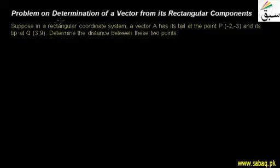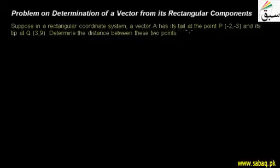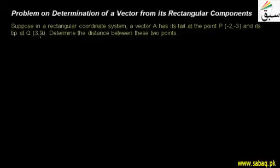Students, let's talk about the determination of a vector from its rectangular components. In this problem, suppose in our rectangular coordinate system, a vector A has its tail at the point P equal to (-2, -3) and its tip at Q equal to (3, 9).